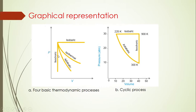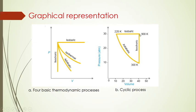In the pressure-volume graph: for an isobaric process we get a horizontal straight line (constant pressure); for an isochoric process we get a vertical straight line (constant volume). For adiabatic and isothermal processes we get a curved isotherm. For a cyclic process, the system traces a closed shape — for example a triangle — going through adiabatic, isochoric, and another process before returning to its initial point.